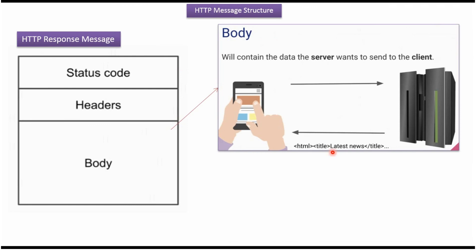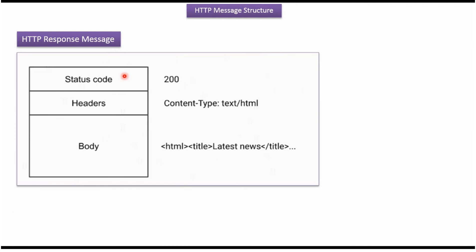The body will contain the data which the server wants to send to the client. Here you can see the HTTP response message structure with an example. The status code is 200, indicating the request was processed successfully. The header is Content-Type: HTML, indicating to the client that the response body contains HTML content. The body is the data which the server sends to the client.